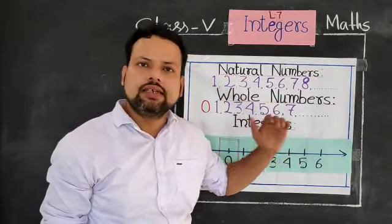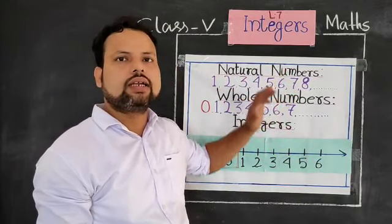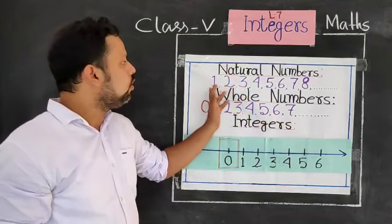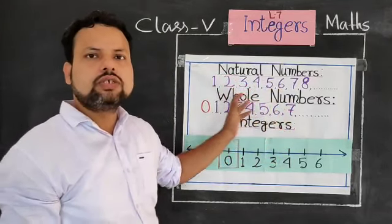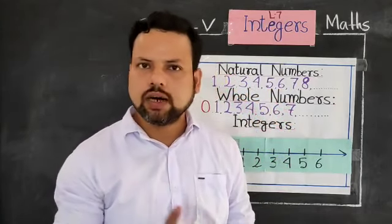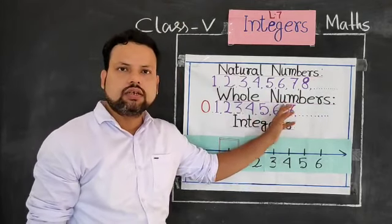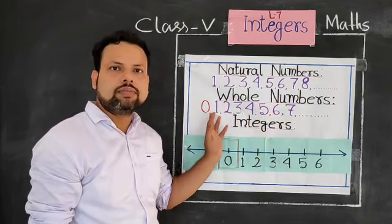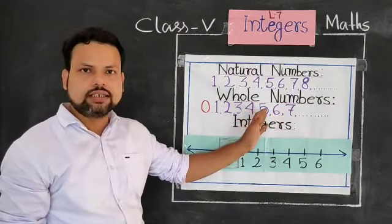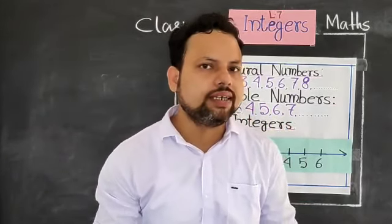Before explaining integers, we have to explain natural numbers and whole numbers. First, natural numbers: all counting numbers starting from 1, so the smallest natural number is 1. Remember this. Now, whole numbers: just add 0 before these counting numbers. So the smallest whole number is 0.